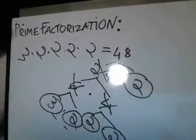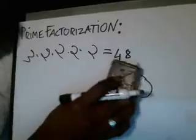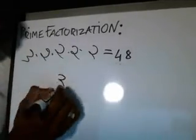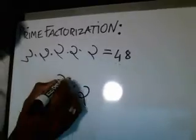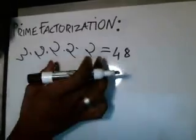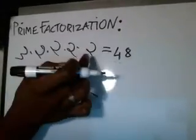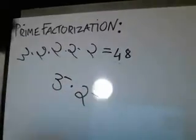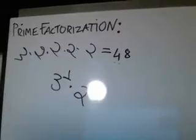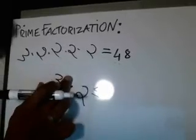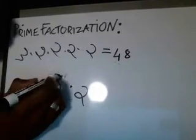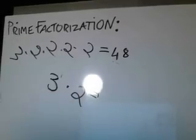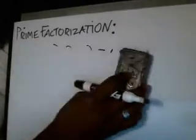And if they want you to simplify this, once again you look at each individual prime number — you have a 3 and a 2. The exponent is the number of times that prime number is repeated. 2 is repeated 4 times, so 4 goes up as the exponent. 3 is repeated once, so it's 3 to the first, which is really just 3. So the simplified form is 3 times 2 to the 4th.